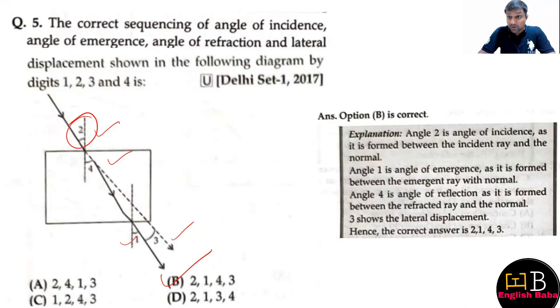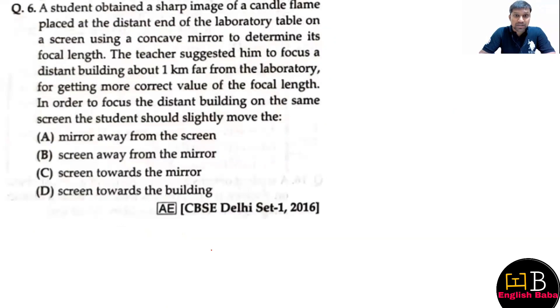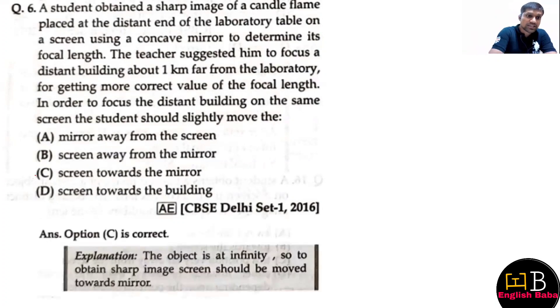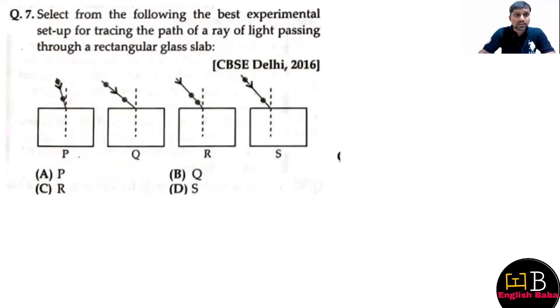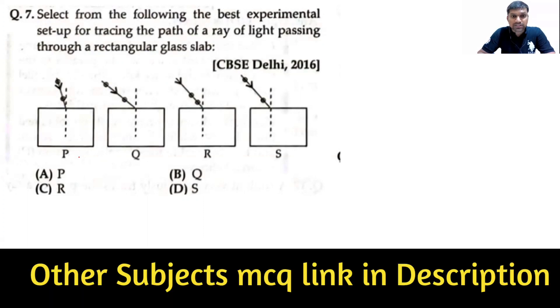These questions are quite important from previous examinations, so you can have a good term one. Let's move on to the next question. A student has to obtain an image on a screen - basically where to place the mirror. The correct answer is option C. You should place it towards the screen, towards the mirror. The next question is to identify the experimental setup. Out of all four options here, the correct option is option D.